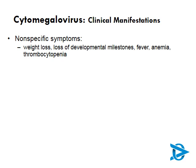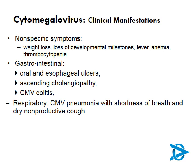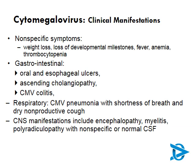Looking further at clinical manifestations, disseminated CMV infection often presents with very nonspecific symptoms — weight loss, loss of developmental milestones, fever, anemia, and thrombocytopenia. There can be a range of gastrointestinal manifestations: oral or esophageal ulcers, ascending cholangiopathy, or CMV colitis presenting with bloody diarrhea. These are often confused with other infections — esophageal ulcers confused with candidiasis, and CMV colitis with other intestinal problems. CMV can also attack the respiratory system with CMV pneumonia, causing shortness of breath and a dry nonproductive cough, easily confused with Pneumocystis jirovecii pneumonia. CNS manifestations can include encephalopathy, myelitis, and polyradiculopathy with nonspecific or even normal CSF.